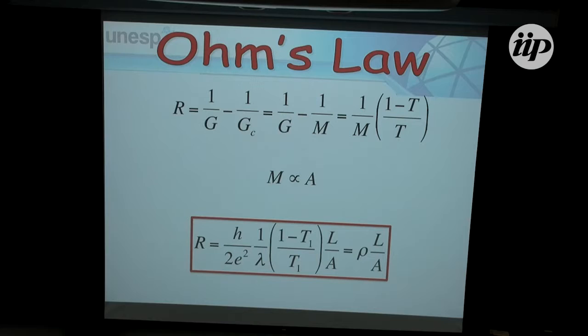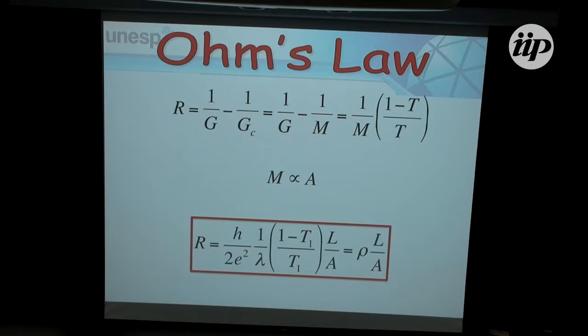I can recover Ohm's law if I go back to this diffusive regime, where I have a very large number of scatterers moving back and forth, provided I have a very large number of channels. So something seems to be right — we can go back to the macroscopic scale.